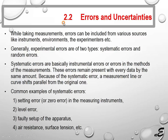Topic 2.2: Errors and Uncertainties. While taking measurements, errors can be included from various sources like instruments, environments, and the experimenters themselves. Generally, experimental errors are of two types.